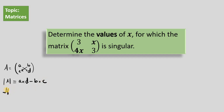Now, if matrix A is singular, all you need to understand is that the determinant of matrix A is equal to 0. In other words, when we work out A times D minus B times C, we will get 0. That's all it means when you say it's singular. Singular matrices don't have any inverse, but that concept is not necessary for this video.